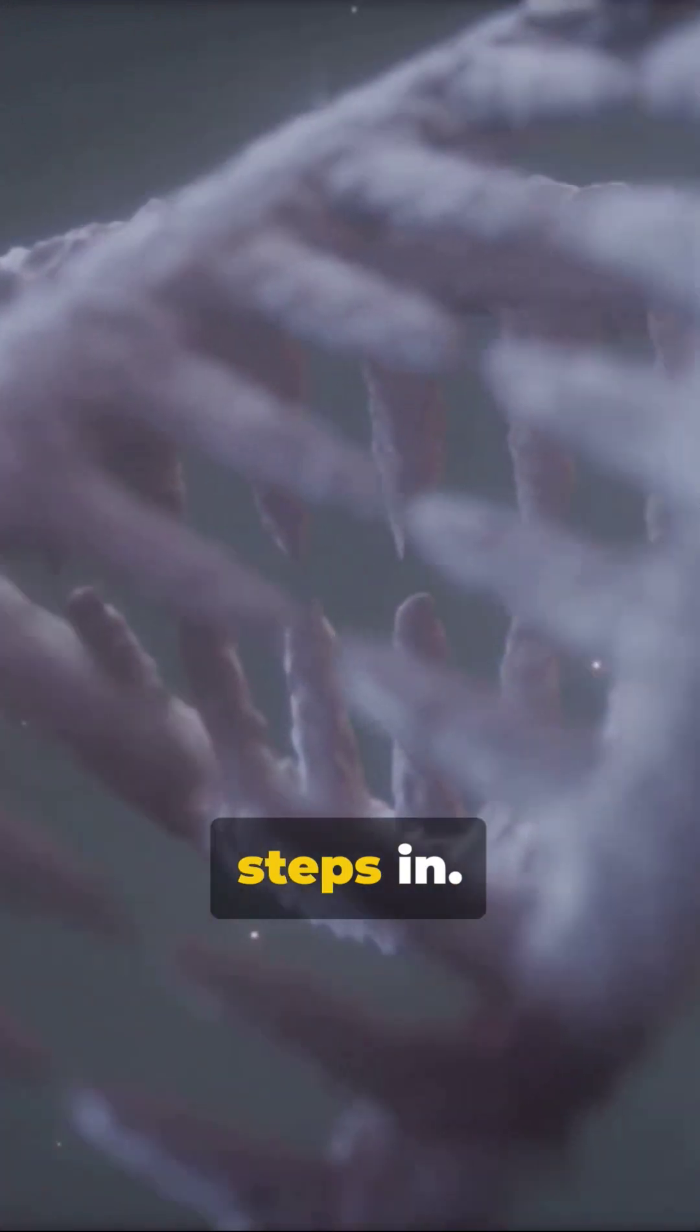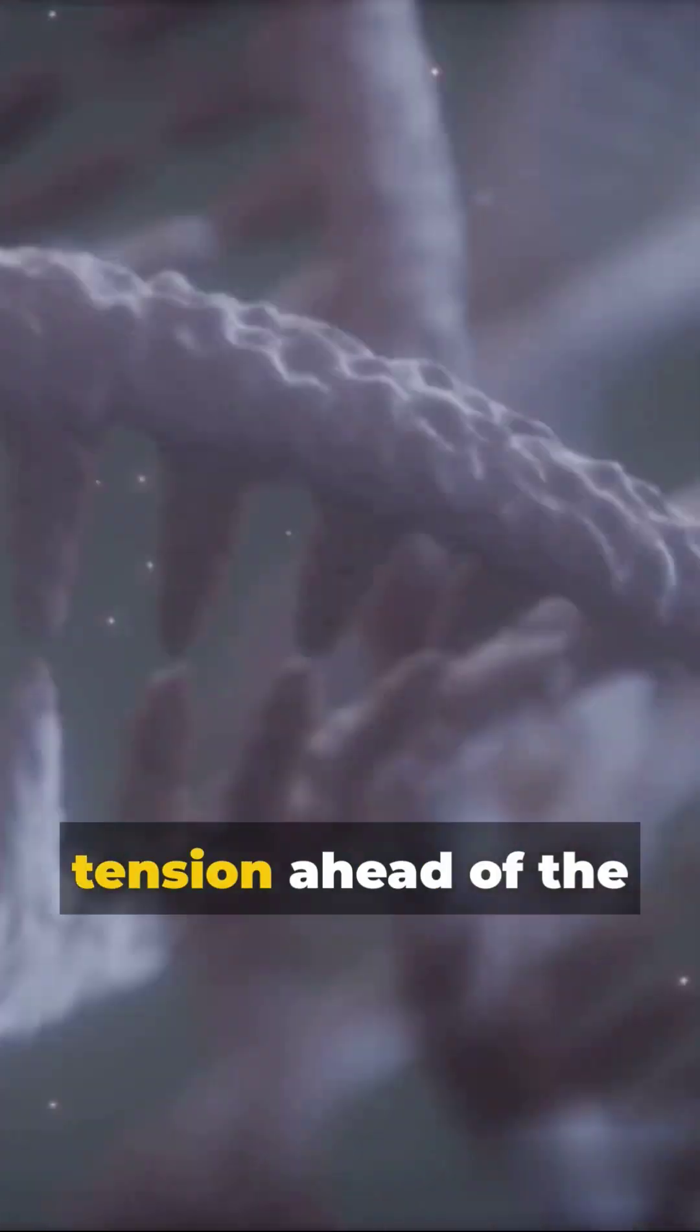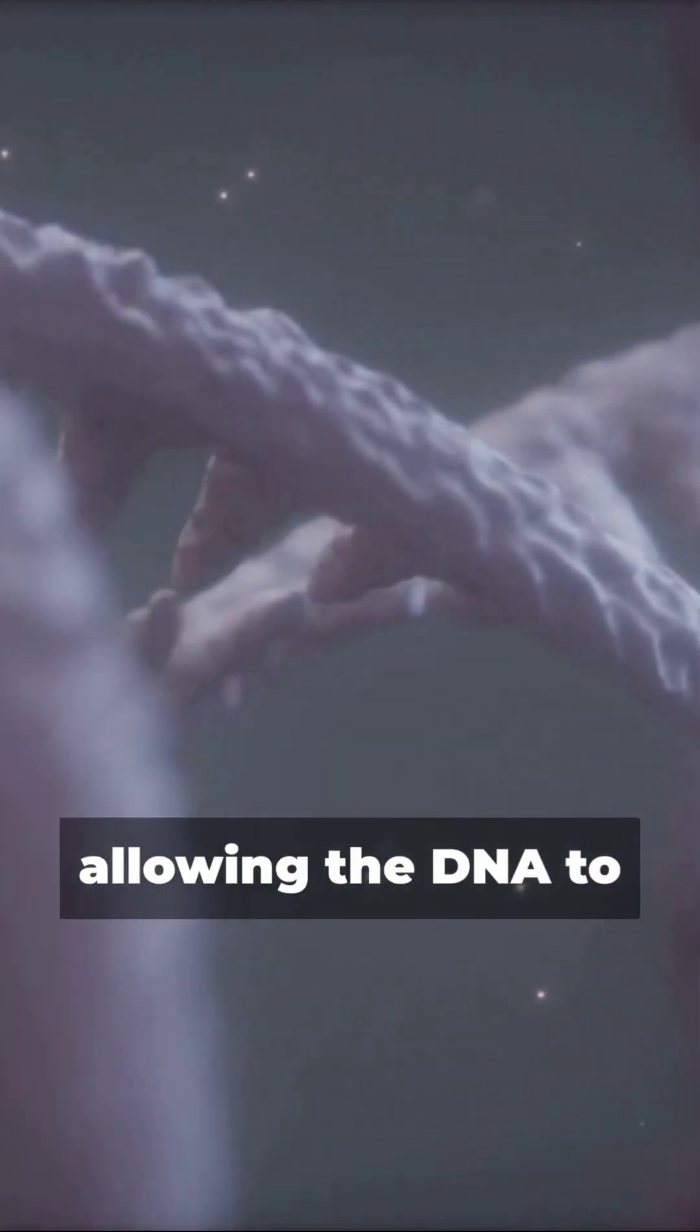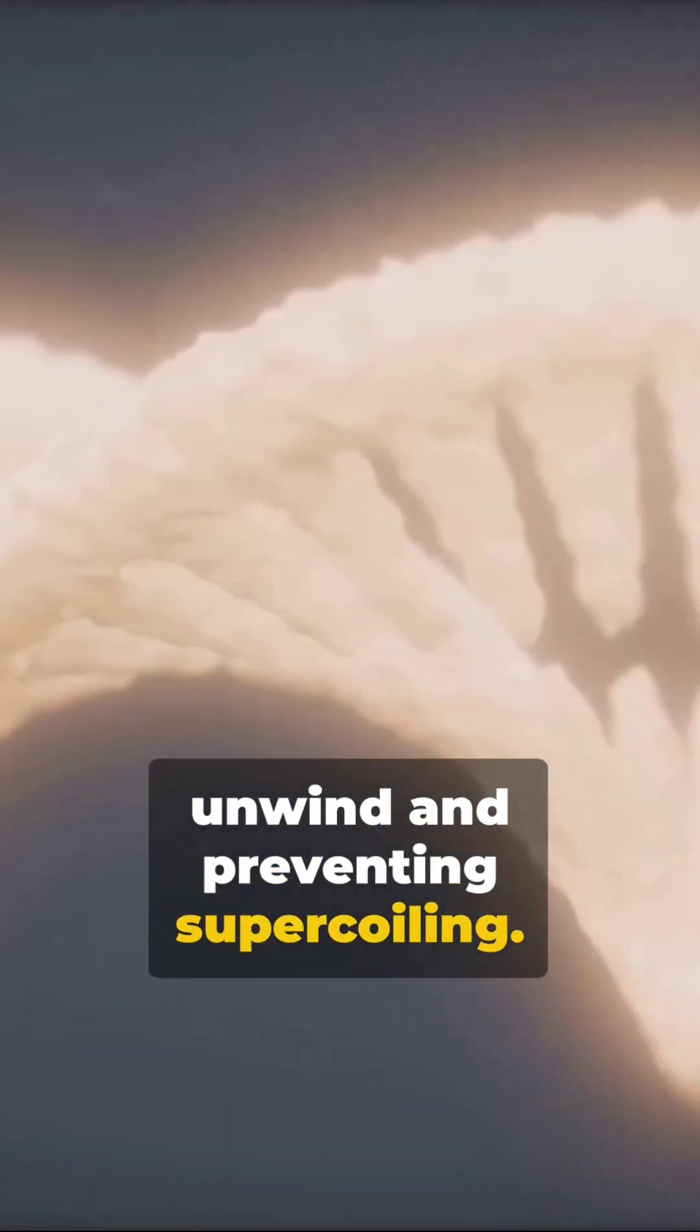Next, topoisomerase steps in. This enzyme relieves tension ahead of the replication fork, allowing the DNA to unwind and preventing supercoiling.